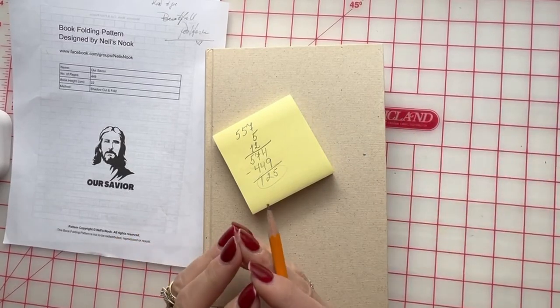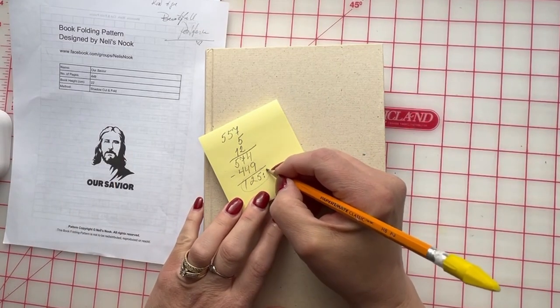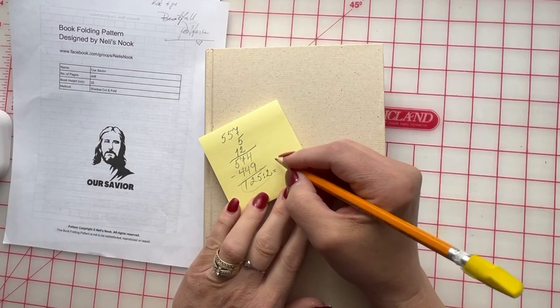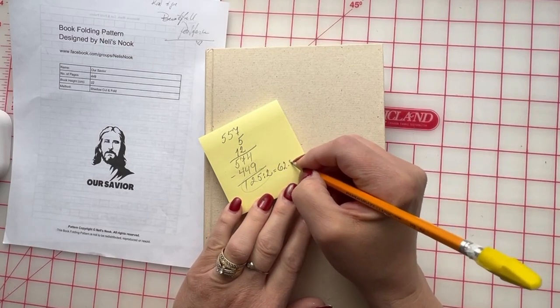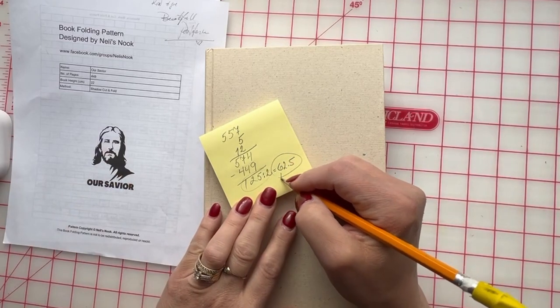Just because I want to have it even in the front and in the back, I will divide it by two and that will give me approximately 62 and a half pages. Okay, well we cannot use half so we will use 62.